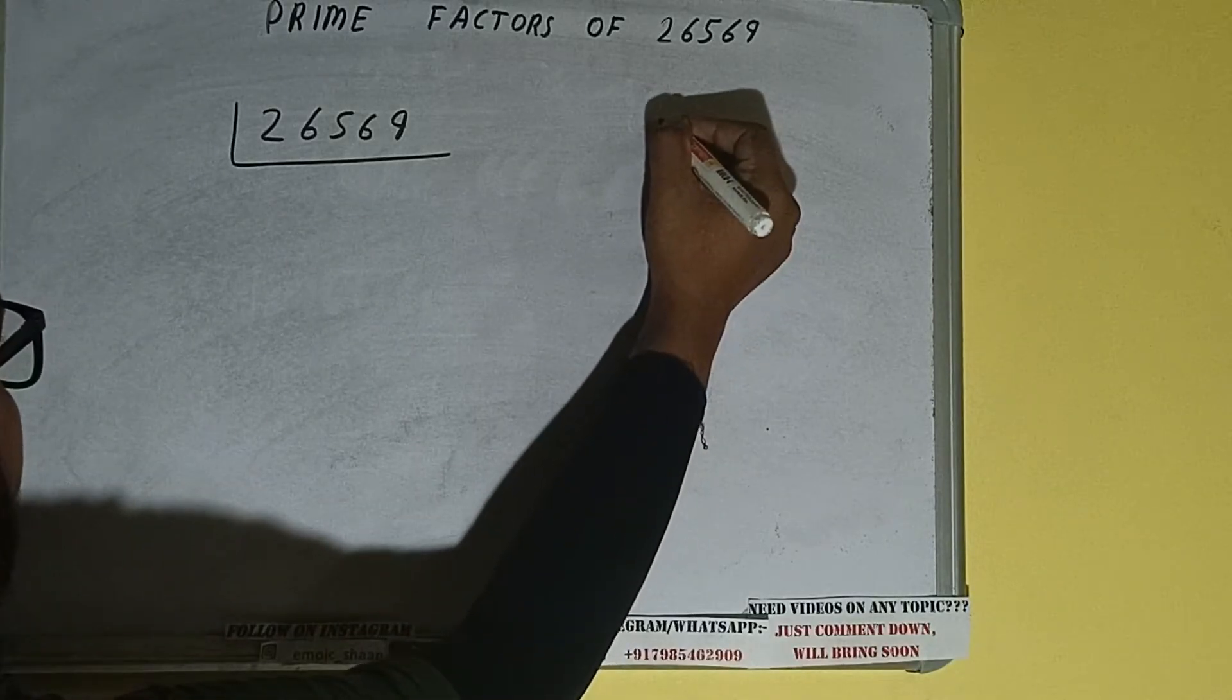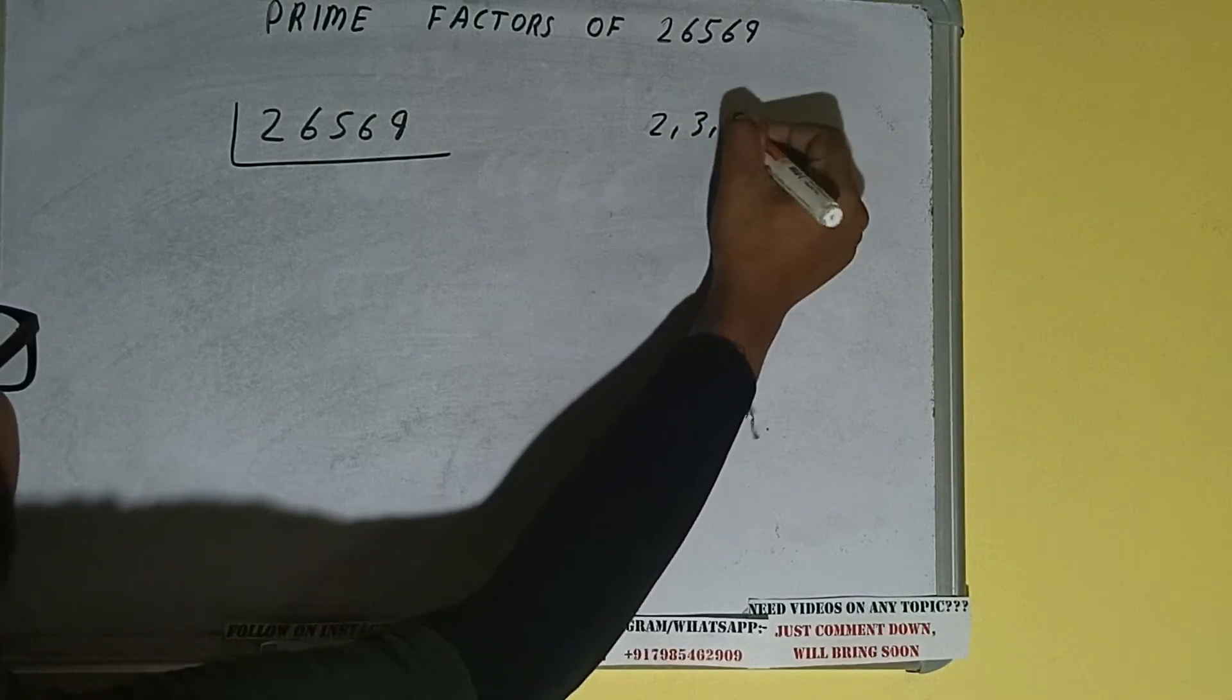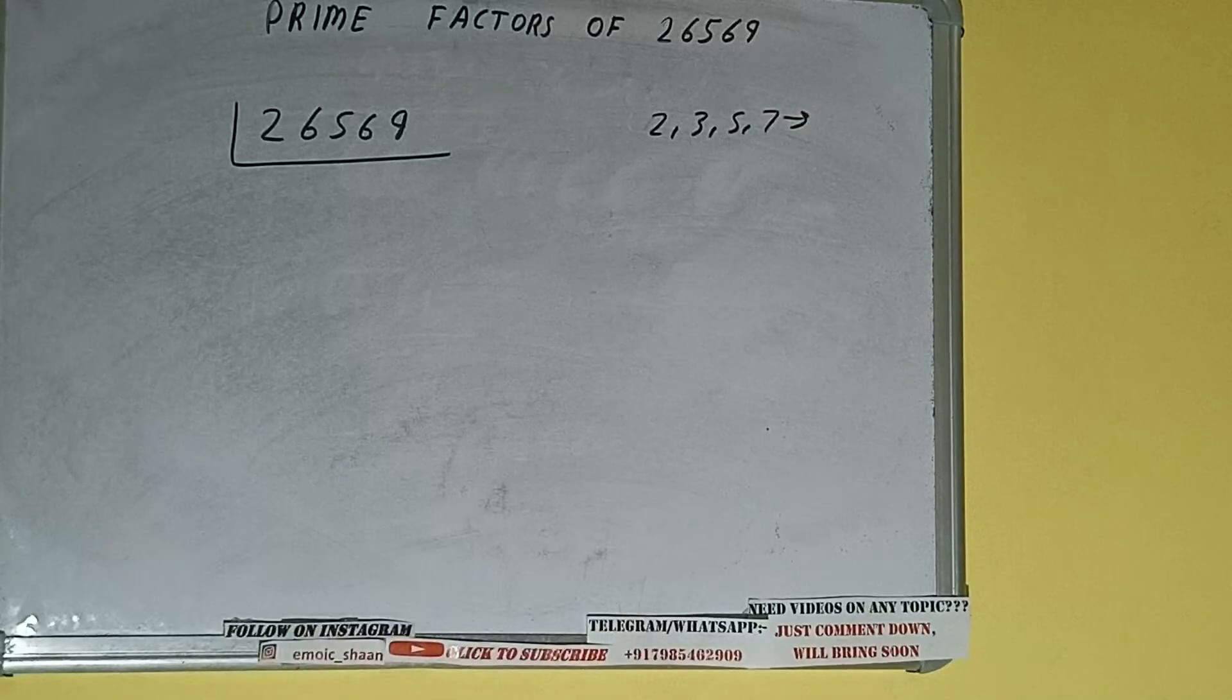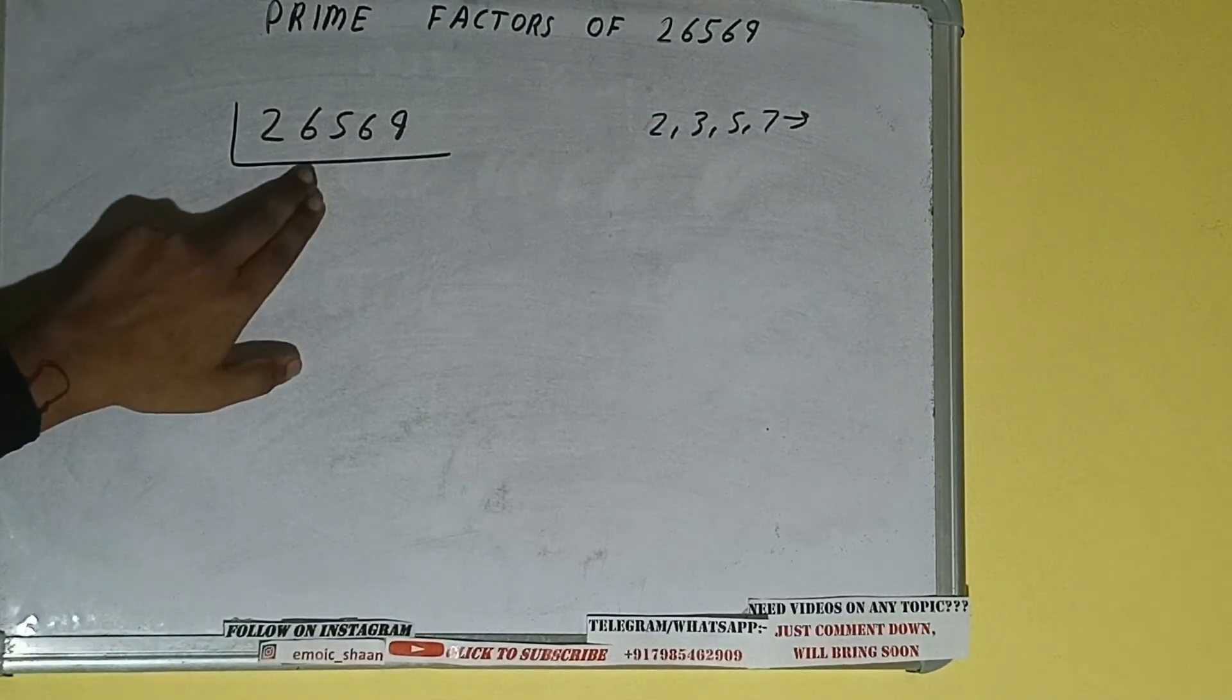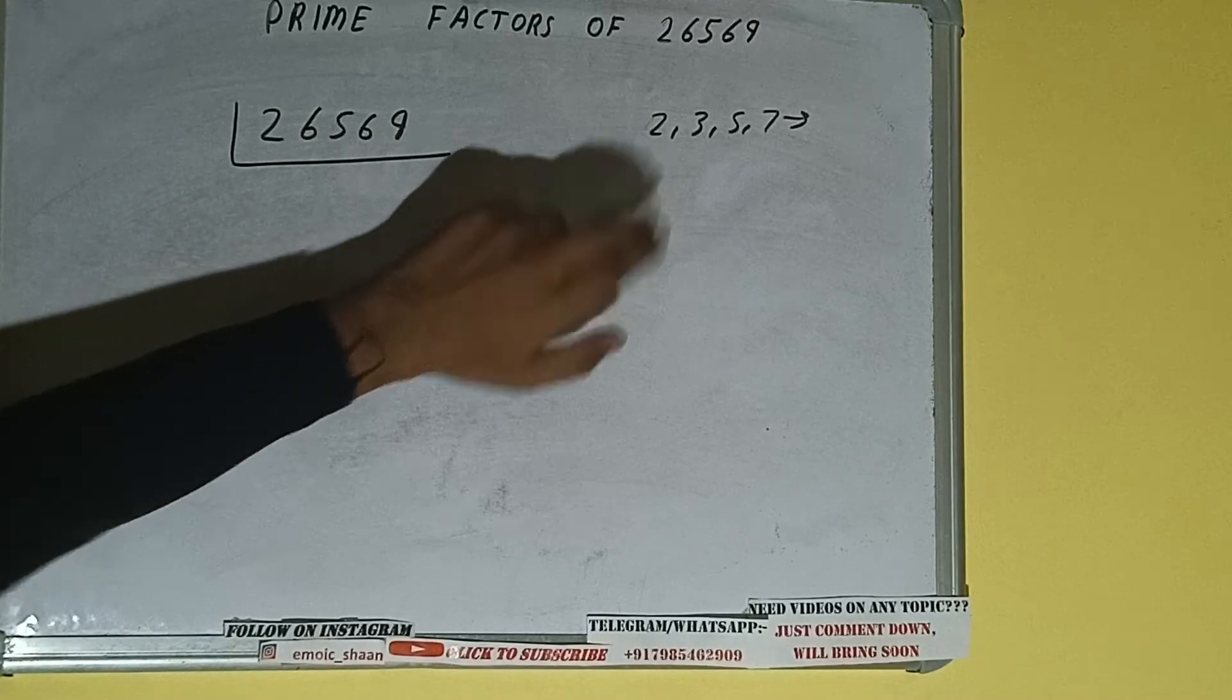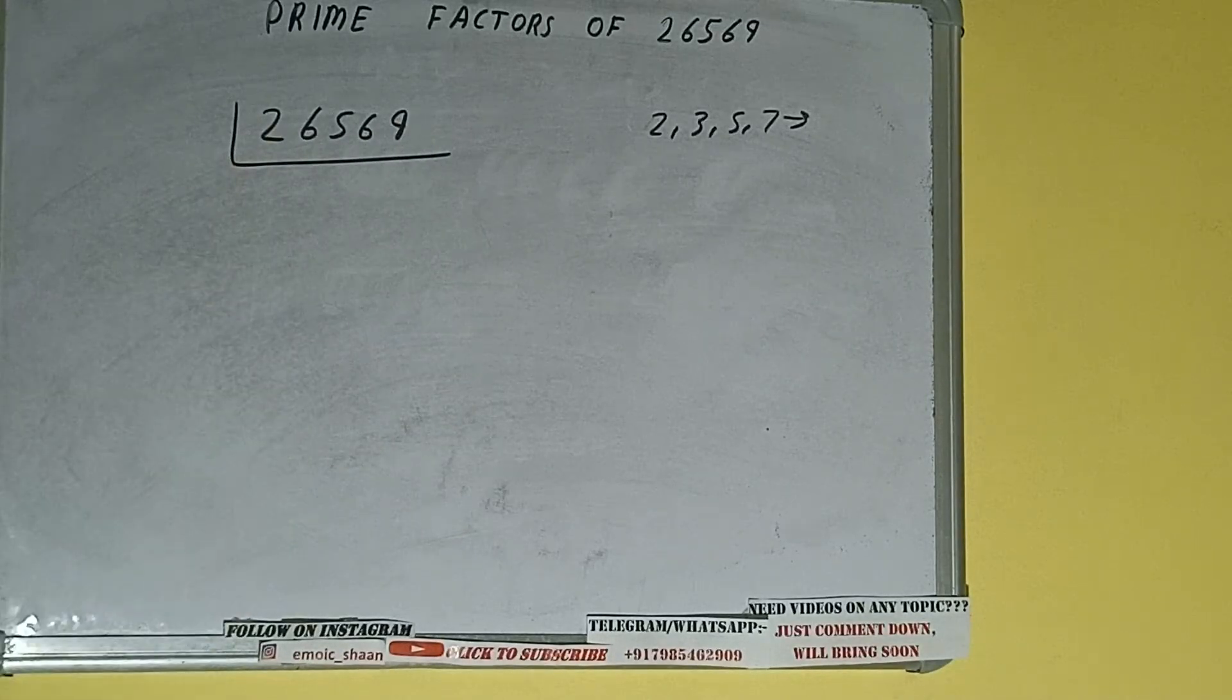All right, so we'll check with the lowest prime number that is two. Is the number 26569 divisible by two? It is not. And if you go on checking three, then five, then seven, then ultimately...